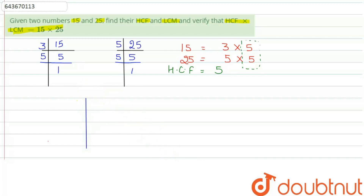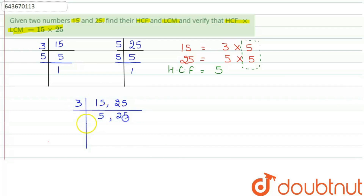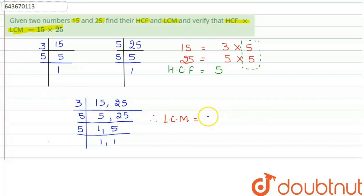Next we will find their LCM. Let us find the common factors of 15 and 25. We get 3 and 5 from 15. Now 5 and 25 are both divisible by 5, giving 5 ones are 5 and 5 fives are 25. Therefore, the LCM will be the product of all the common factors of 15 and 25, which is 3 into 5 into 5. That is 5 into 5 is 25, and 25 into 3 is 75. So the LCM is 75.